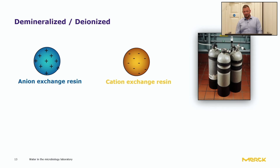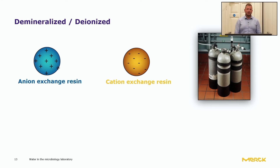When it comes to demineralised and deionised water, this is where mains water source is passed through ion exchange containers. This removes the ions, but again this can be a very costly process due to these cartridges continuously needing to be changed. It also from a storage point of view means these cartridges can take up a lot of space within your lab.